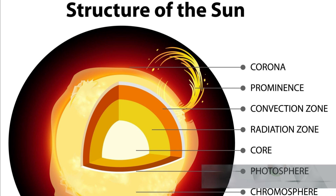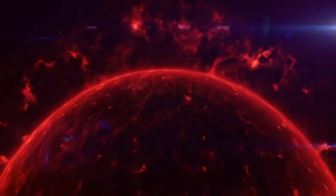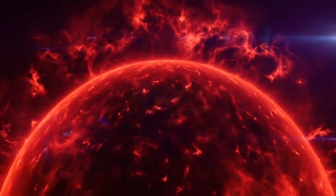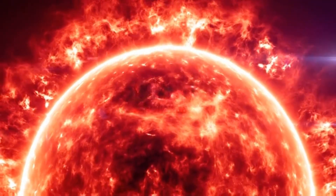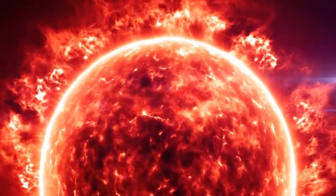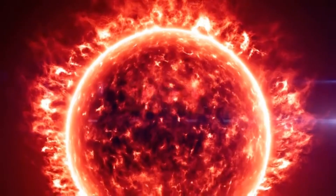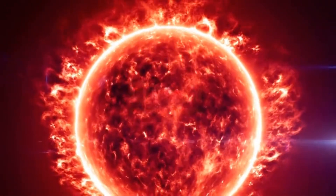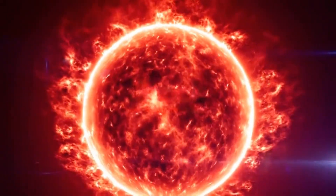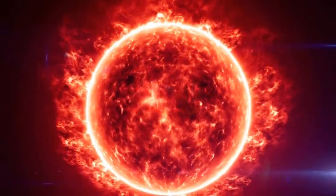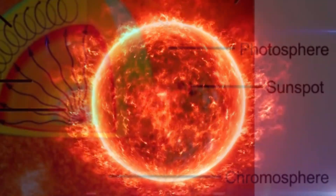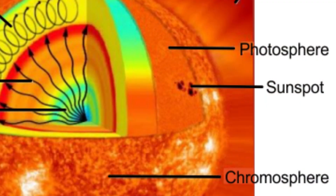The Chromosphere is a thin layer above the photosphere that glows faintly in red due to hydrogen. It is a transitional layer between the photosphere and the corona, with temperatures ranging from about 6,000 degrees Celsius at the bottom, rising to 20,000 degrees Celsius at the top.